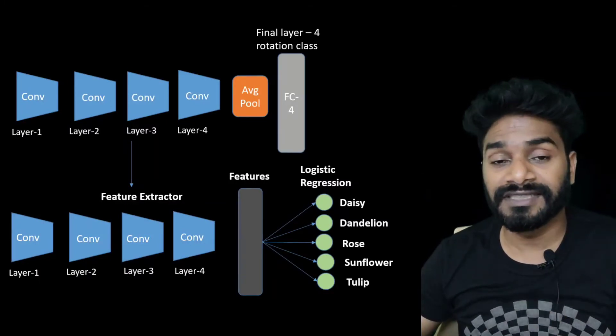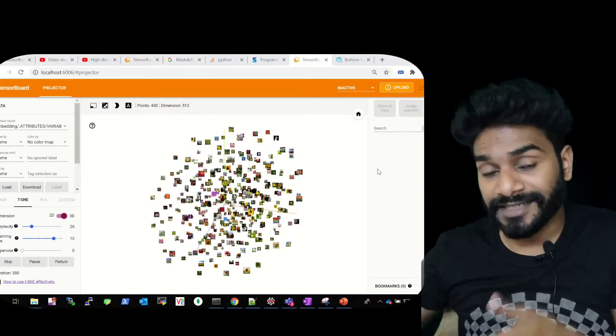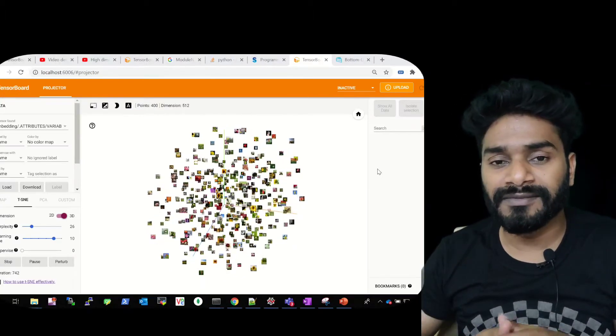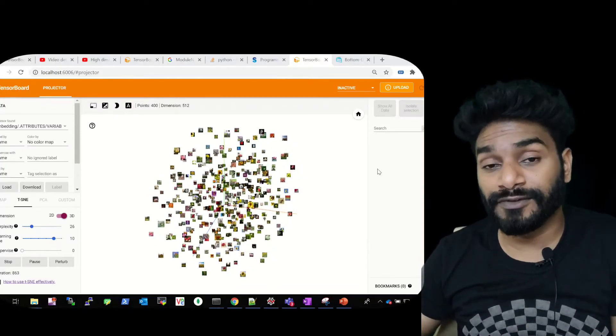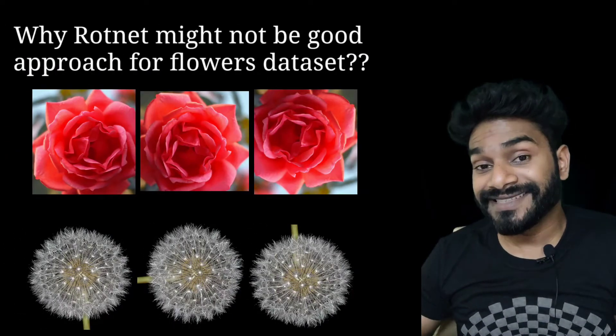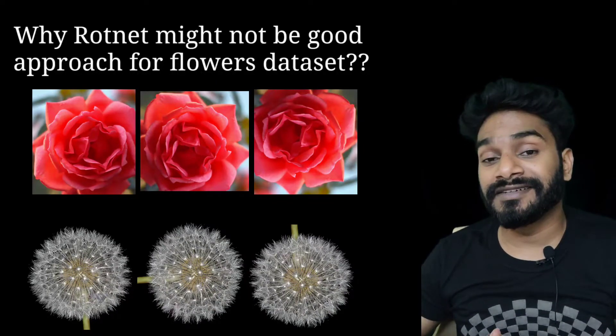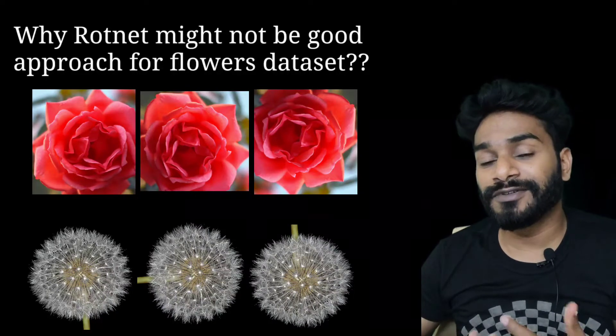We'll go through the code, train, and see the results. We'll also try to plot the features on TensorBoard, maybe in this part or the second part of the video, and see how the features look in the embedding space — both for RotNet and after fine-tuning for the actual flower recognition task. We'll also try to answer the question of why RotNet may not be a great way of doing self-supervised training for the flowers dataset.